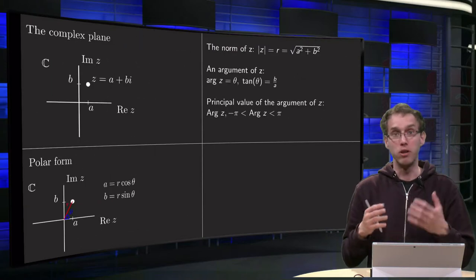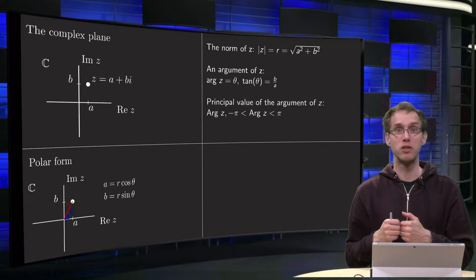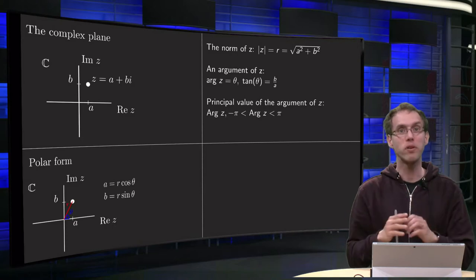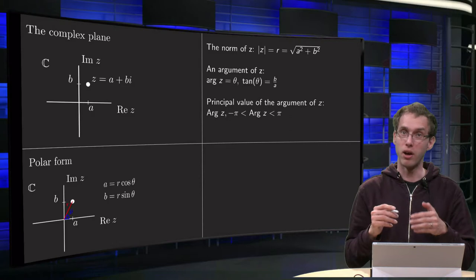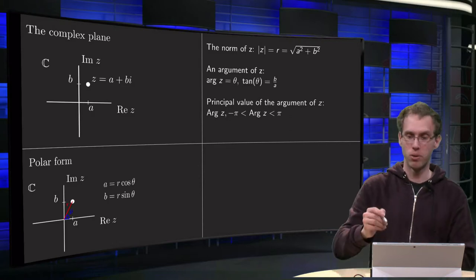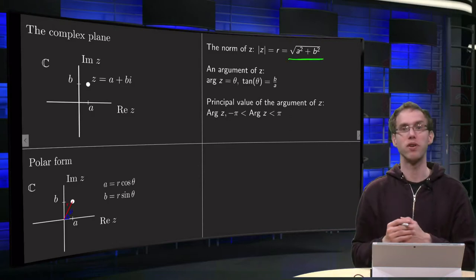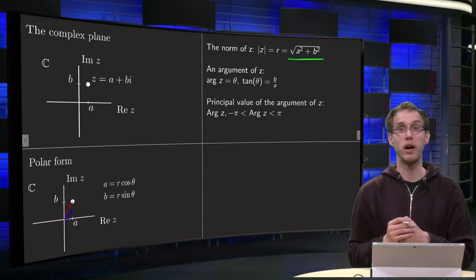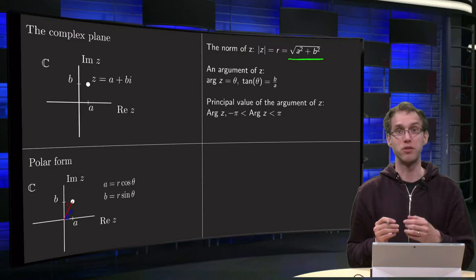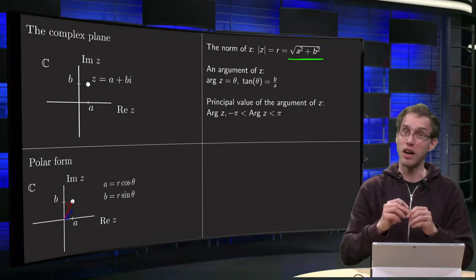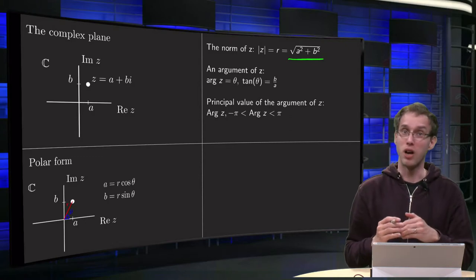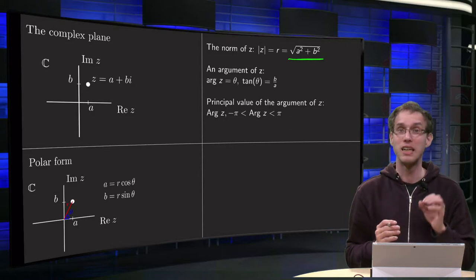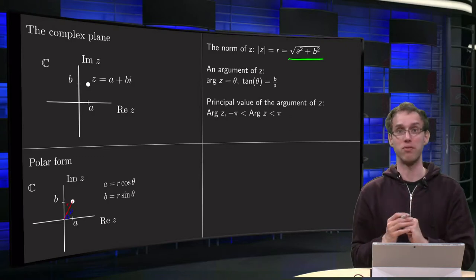So how do we compute R and theta for a complex number? For the norm R, we have no problems: R squared equals A squared plus B squared, so R equals the square root of A squared plus B squared. We always take the positive square root because R is the distance. For theta, which is called the argument of Z, we have to be a bit more careful.